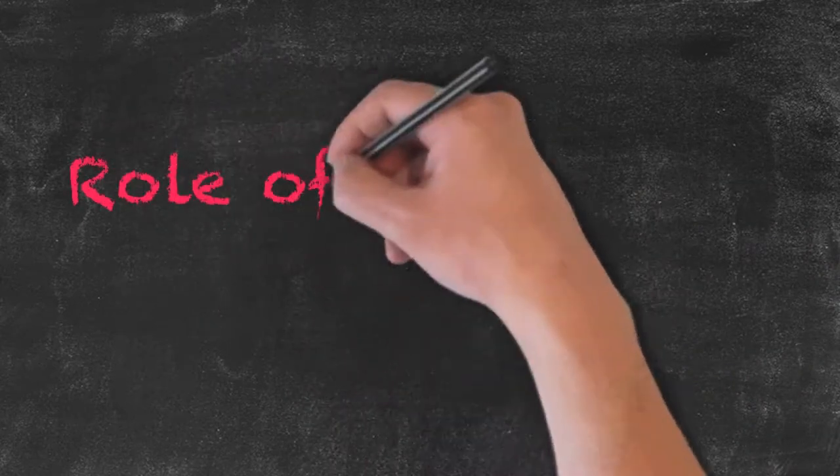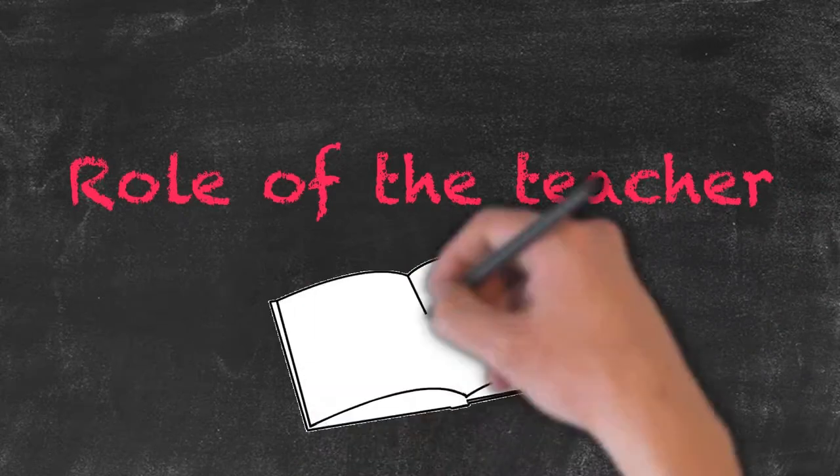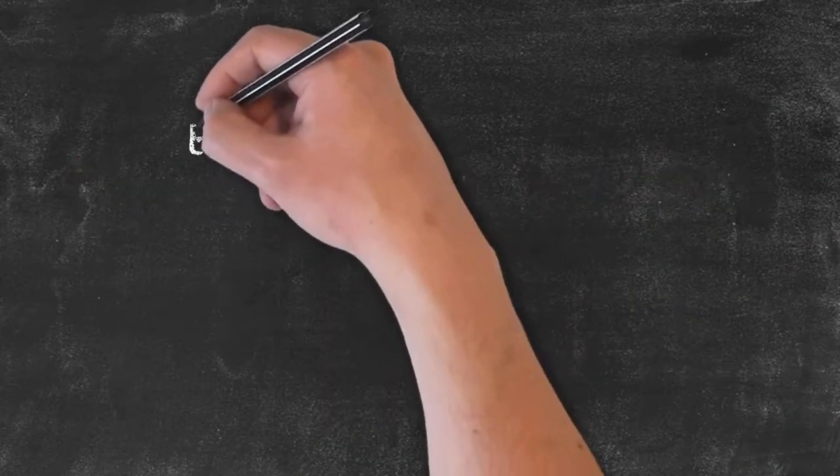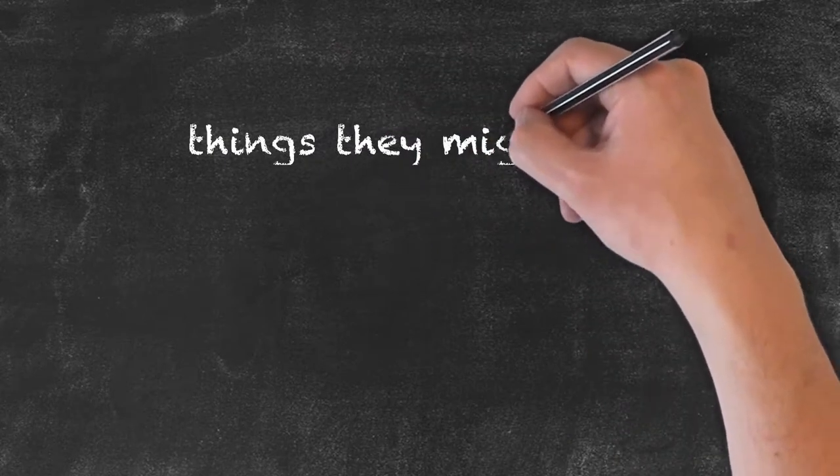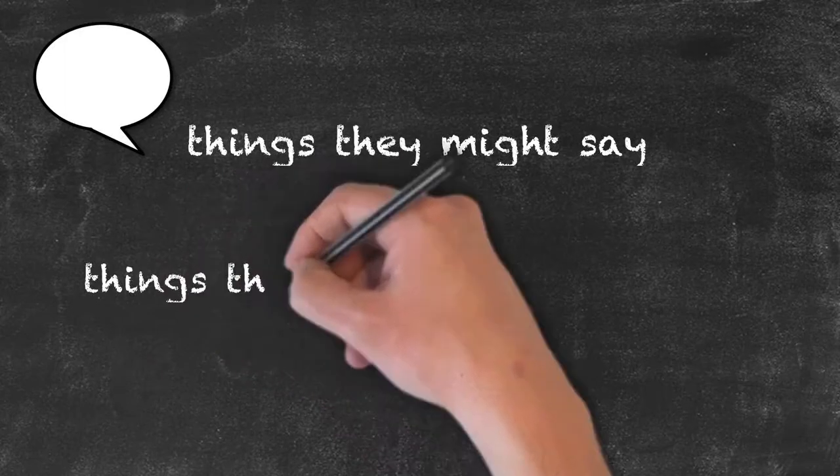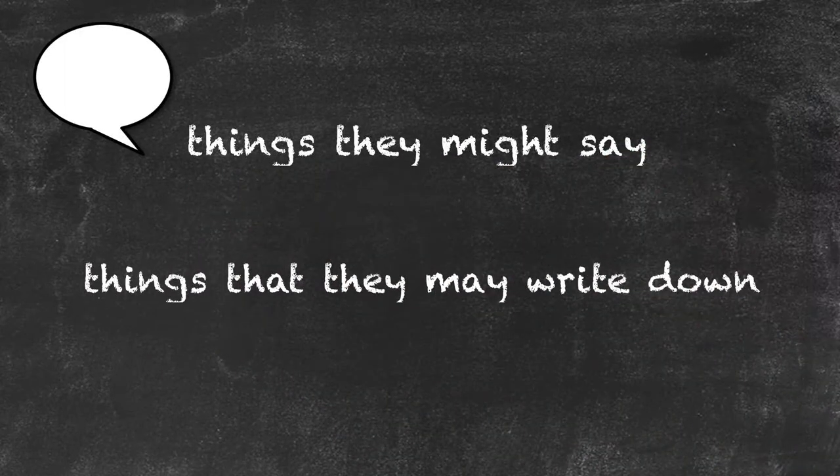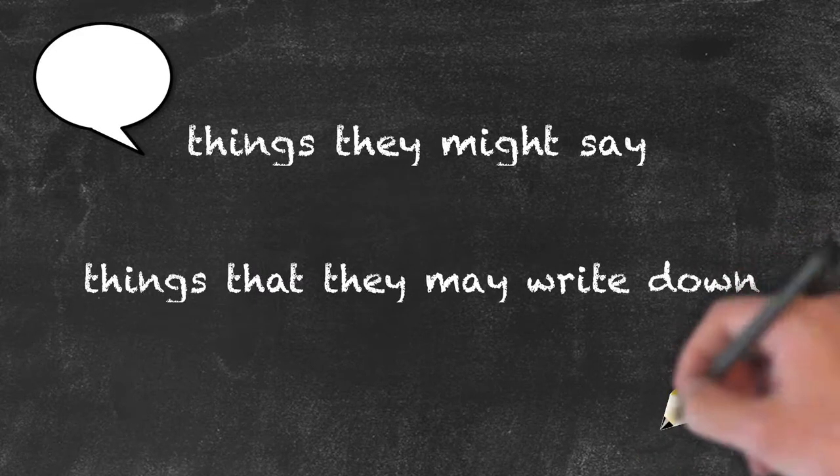So the role of the teacher within the classroom is going to be very wide and it will often change from moment to moment. In order to illustrate some of the things that the teacher could be doing at various times, we're going to use some of the things that they might say or write down, and from those we'll have a look at the role of the teacher at that point in time.